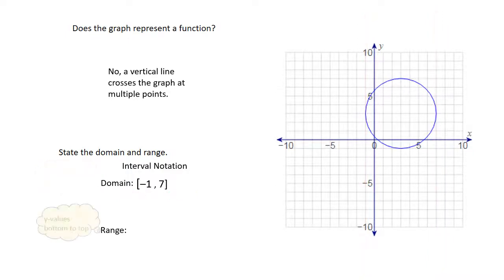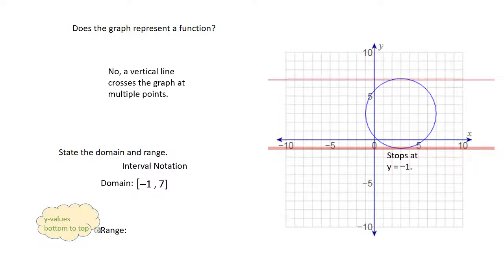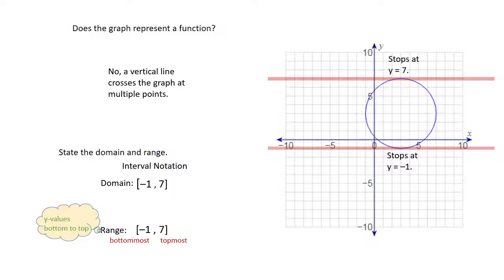The next thing we're going to look at is the range, thinking about y values from bottom to top. The bottom of this graph is showing at y = −1, and the top of this graph is showing at y = 7. So we're going to show our bottom-most value with a bracket at −1 and our top-most at 7. This is just a coincidence that the numbers are the same — you're really looking at the graph and where it stops in the y values and where the x values stop.